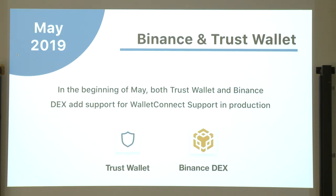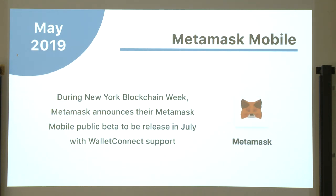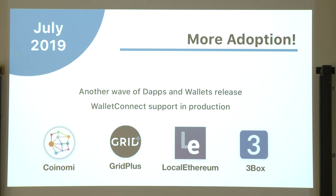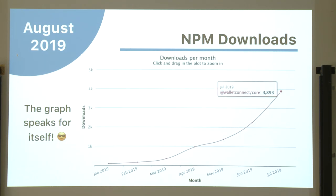We got Binance and Trust Wallet — Trust Wallet users could connect using WalletConnect on the Binance DEX. Then in May during Blockchain Week, MetaMask announced they were going to release a public beta with WalletConnect in July. After that we had Rainbow, Pillar, Matic, Bamboo Relay, Coinomi, GridPlus, Local Ethereum, TreeBox, and many more. Last month we reached almost 4,000 downloads. We really want this to be like the USB for wallets — a universal protocol where everyone shares one infrastructure and doesn't have to integrate multiple solutions for mobile wallets.